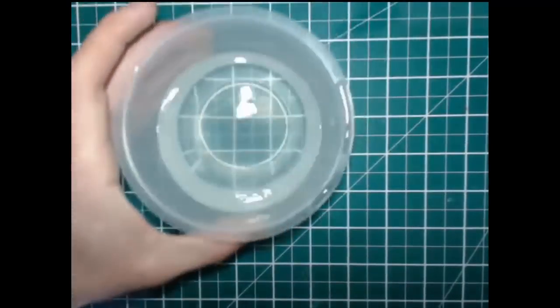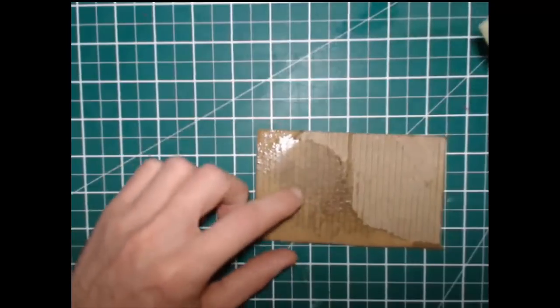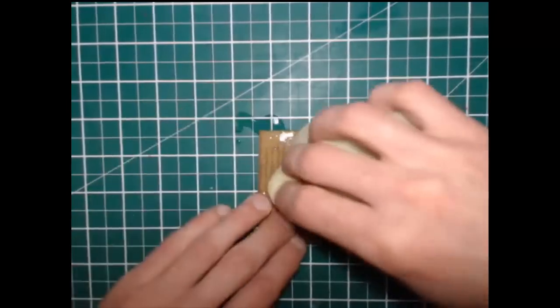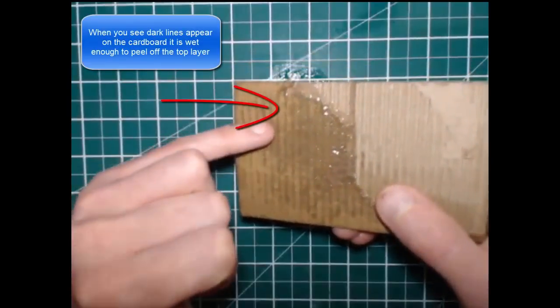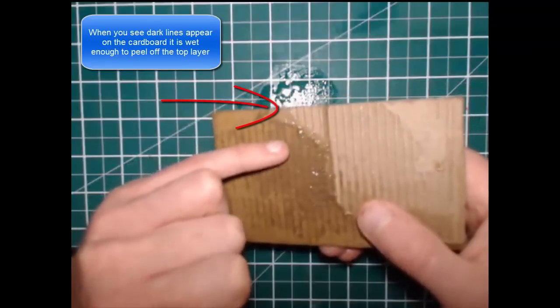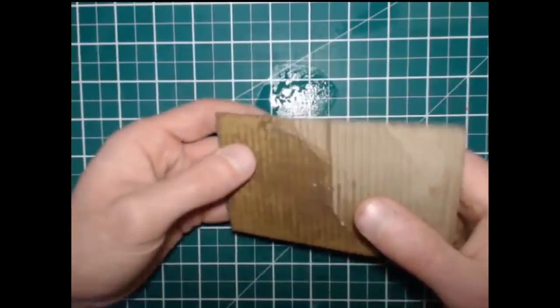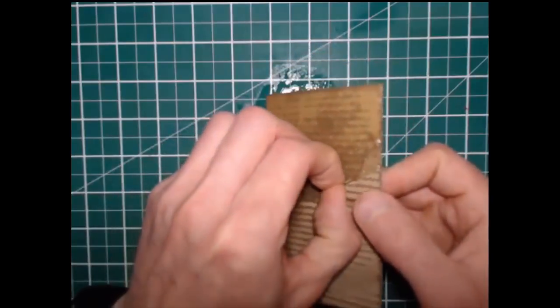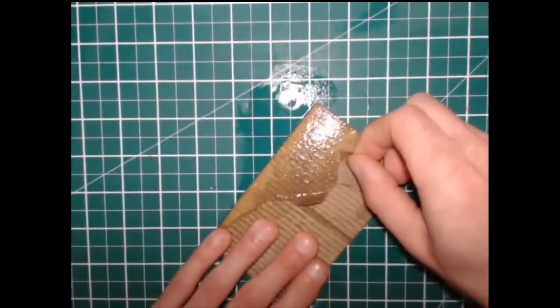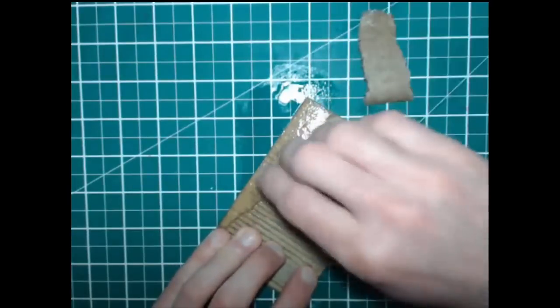We need some water and a sponge that's just to dampen the cardboard and all we do is we just wet the cardboard with the sponge. This is one I started a bit earlier. And you can see the lines start to turn dark here on the cardboard. Now when you see the lines start to turn dark that's a good sign because that means the glue that's holding this top layer to the corrugated layer is actually softening and it will allow us to peel it off.